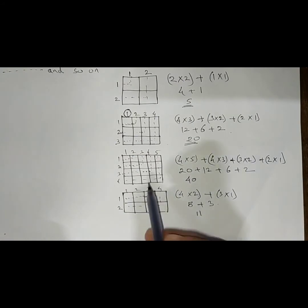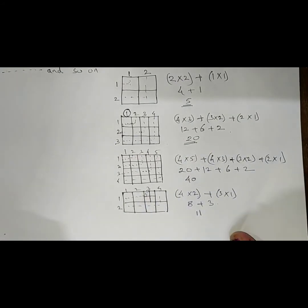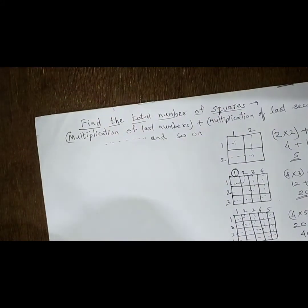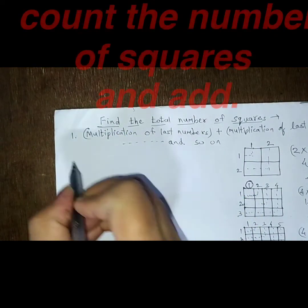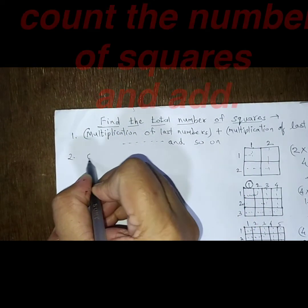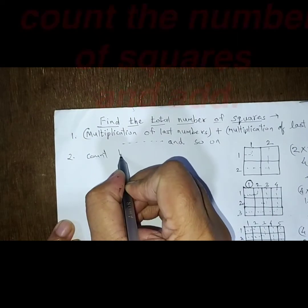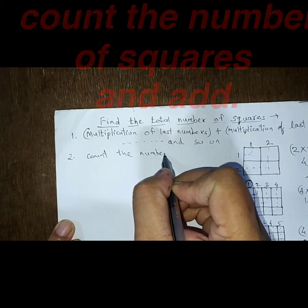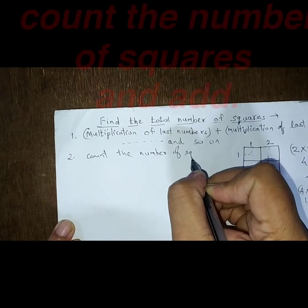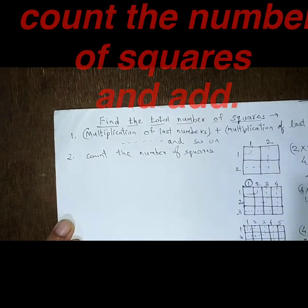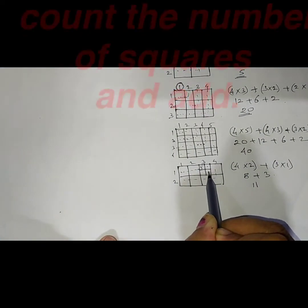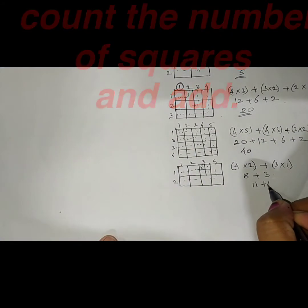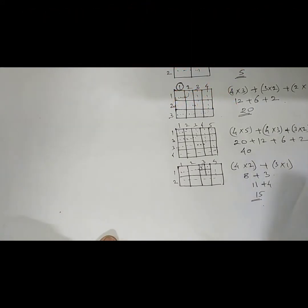Now here again this box is divided. So let's go to the second step. And the second step says that just count the number of boxes. Count the number of squares. Now here it's simple: 1, 2, 3 and 4. So here I have to do plus 4. And the total answer, final answer is 15.